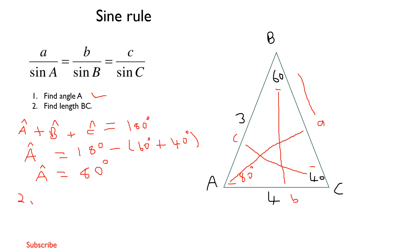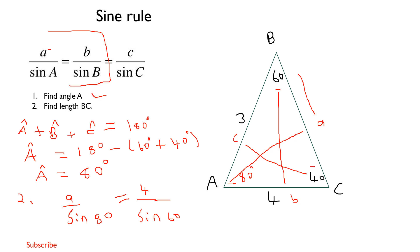Since we want to find lowercase a, we need a/sinA in our equation. We already know angle A is 80°. We decide to equate a and b: a/sin80° = b/sin60°. Here, lowercase b is given as 4, and angle B is 60°. So the equation becomes: a/sin80° = 4/sin60°. Remember, you only equate two pairs at a time.